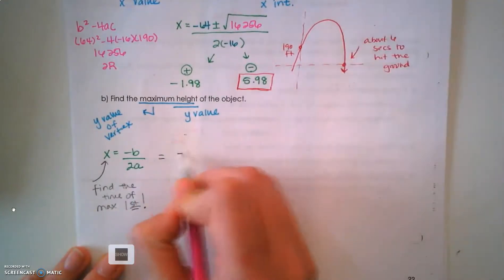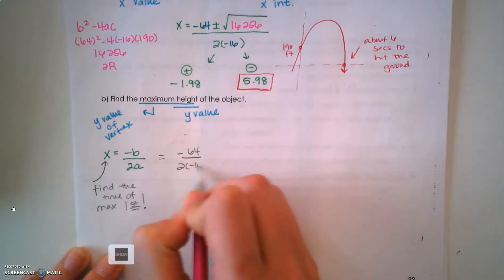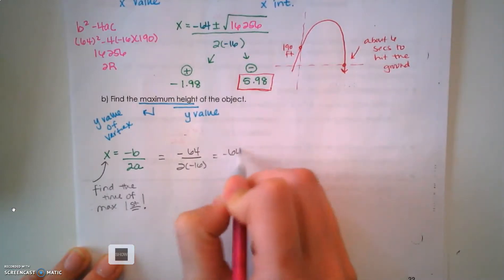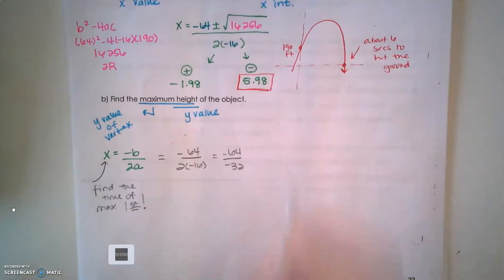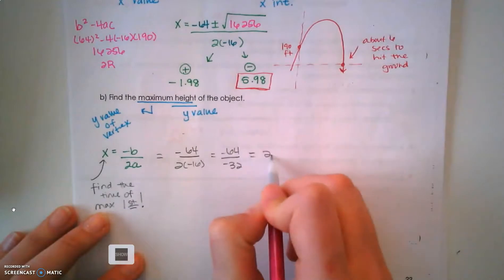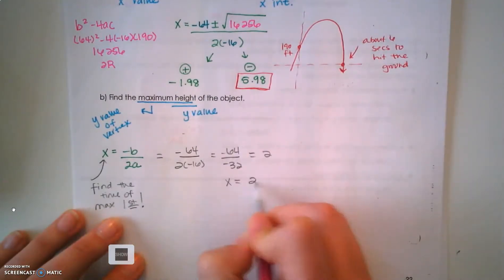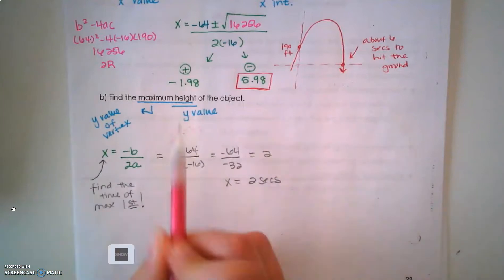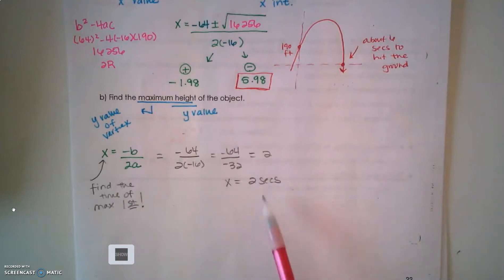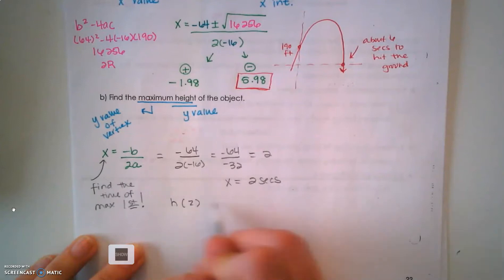You have to find the x first. The opposite of b - the opposite of a positive 64 is a negative 64 - all over 2 times a negative 16. So negative 64 divided by negative 32, that's equal to 2. So x equals 2 seconds. But what are we solving for? We're solving for a y value.